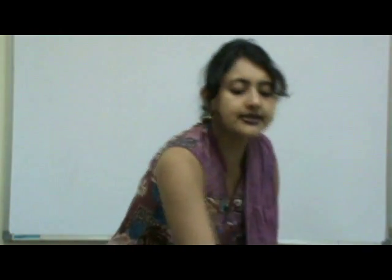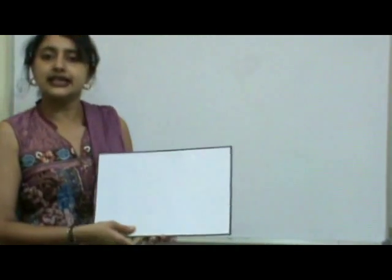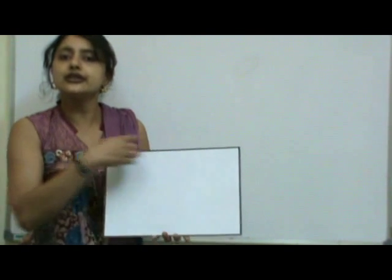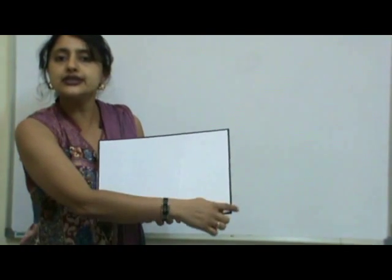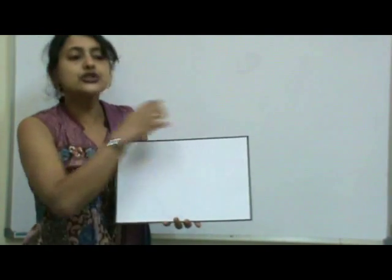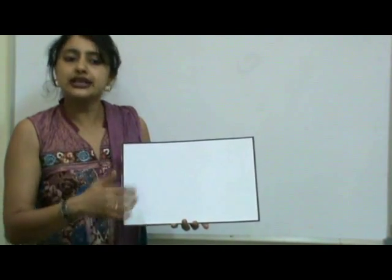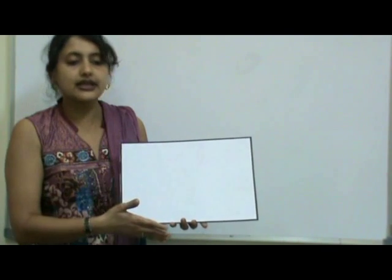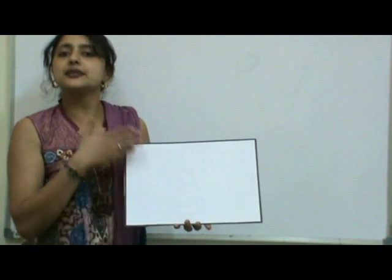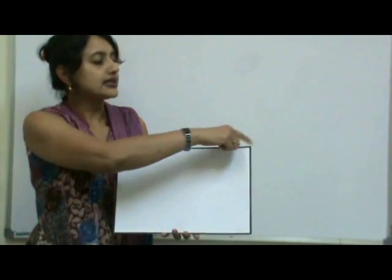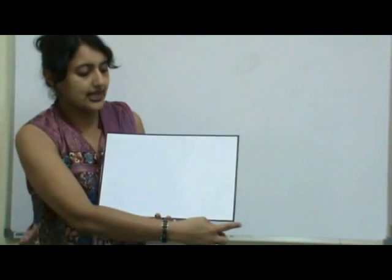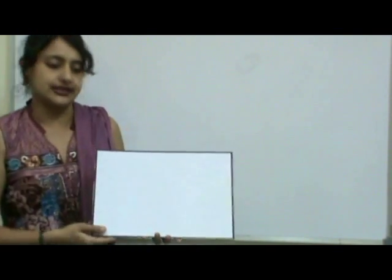Next is a rectangle. The longer side is called the length, the shorter side is called the breadth, and it also has four sides. Opposite sides are equal as well as parallel to each other, and it has four vertices.